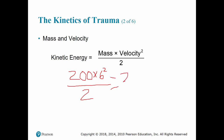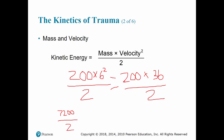6 squared is 36, so now we have 200 times 36, divided by 2 — which gives us 7,200 divided by 2, leaving us with 3,600 pounds per square feet.